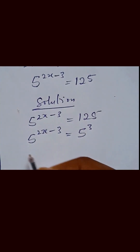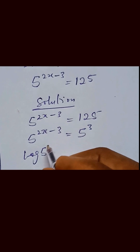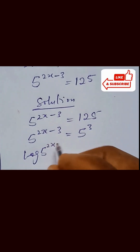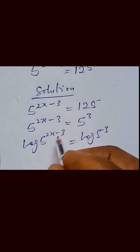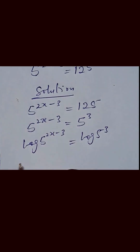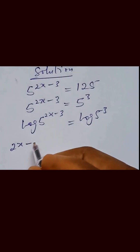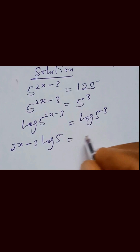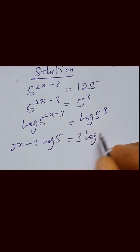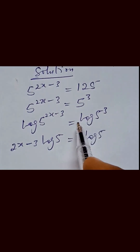From here, we take the log: log of 5 raised to the power 2x minus 3 equals to log of 5 raised to the power 3. We now bring the exponents down: 2x minus 3 times log of 5 equals to 3 times log of 5.